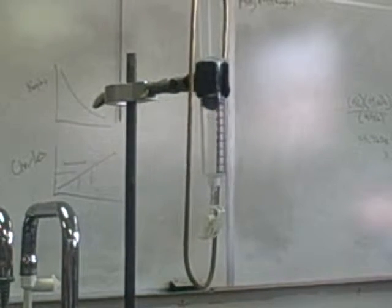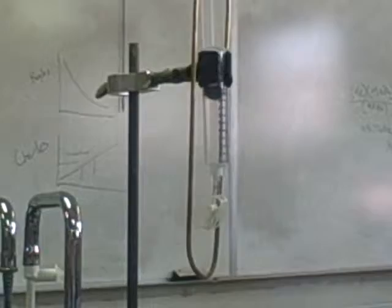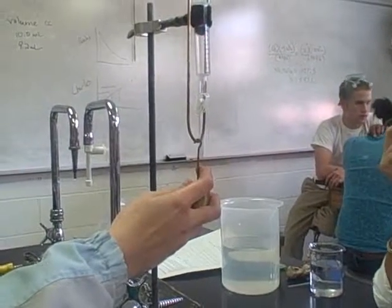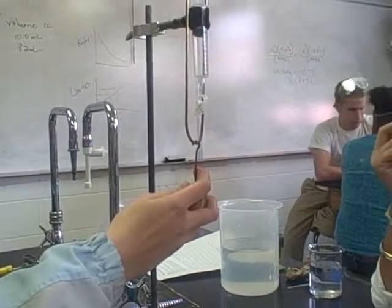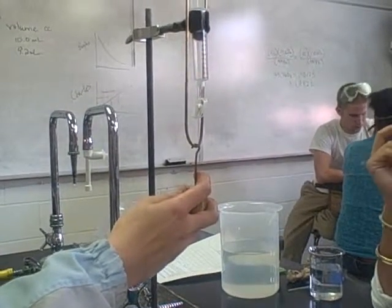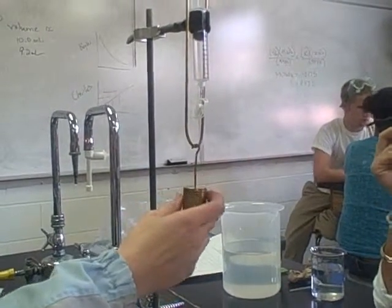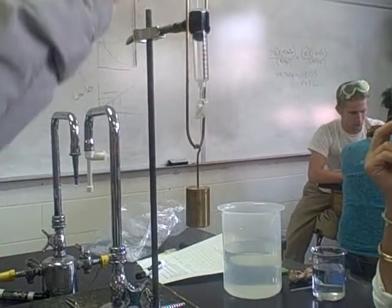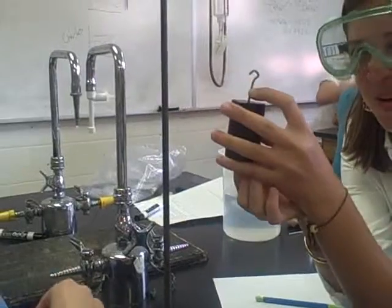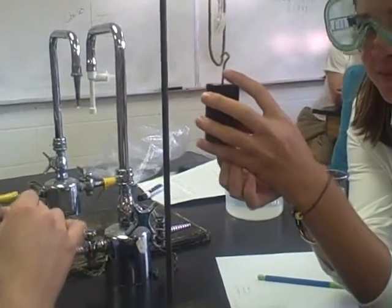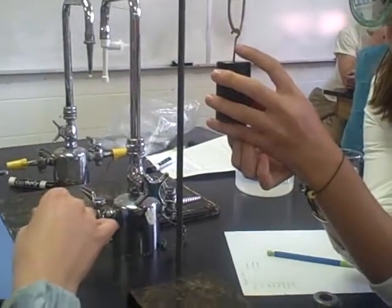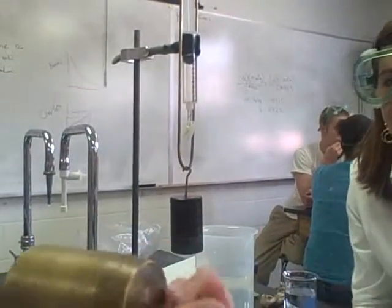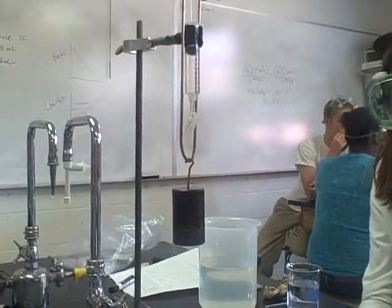First we found the initial volume of the syringe. Now we found the volume of 200 grams. We are taking the volume of 500 grams.